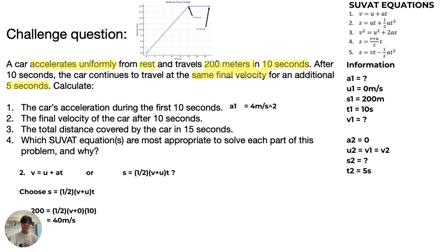To avoid that risk, we would just use the information that's already given to us in the question. So s = ½(v + u)t - we just put all the values in and we're able to get the final velocity, which is 40 meters per second.